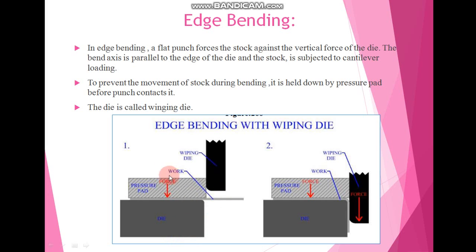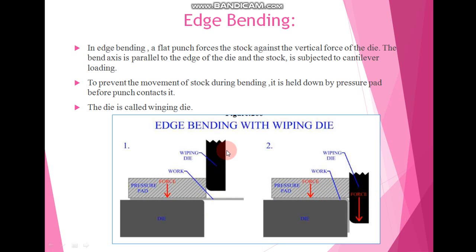These two diagrams represent edge bending with a winging die. In the first diagram, the black portion shows the punch. This is our pressure pad which holds the work piece against the punching force, and then the bending operation is done by applying the force over the material with the help of this punch.